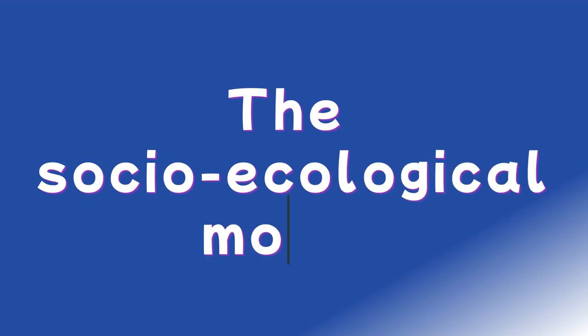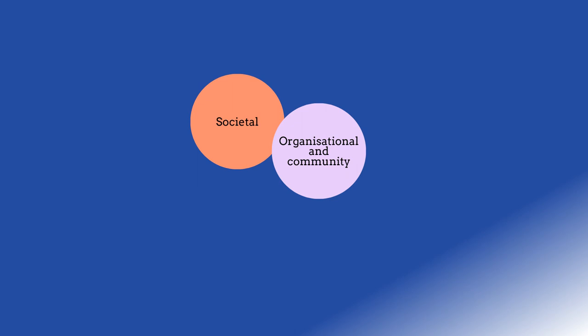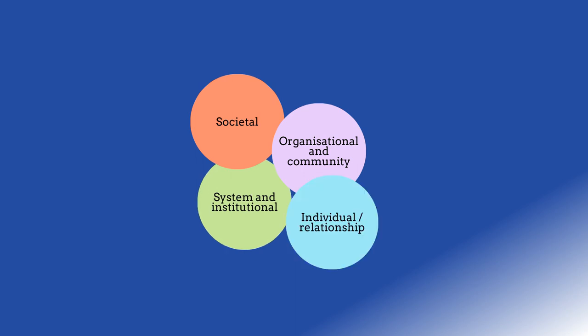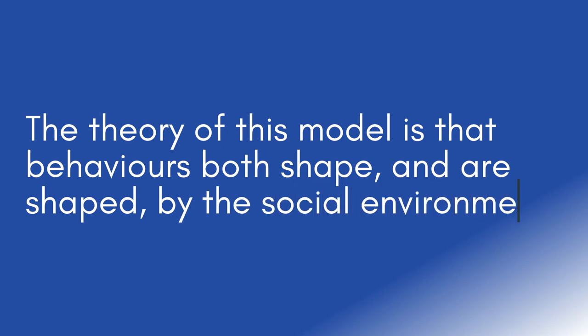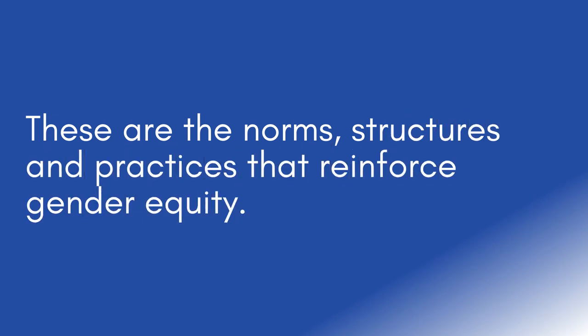Women's Health Goulburn North East are here to talk about the socio-ecological model. The levels of the socio-ecological model are: societal, organisational and community, system and institutional, individual, and relationship. The theory of this model is that behaviours both shape and are shaped by the social environment. These are the norms, structures and practices that reinforce gender equity.